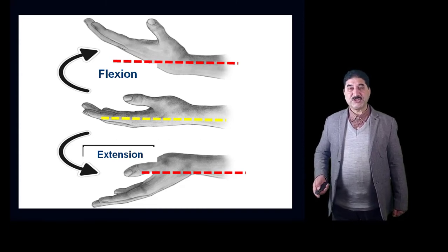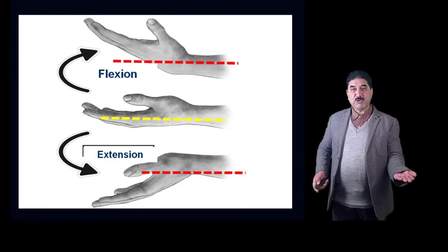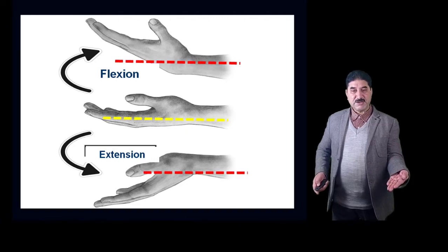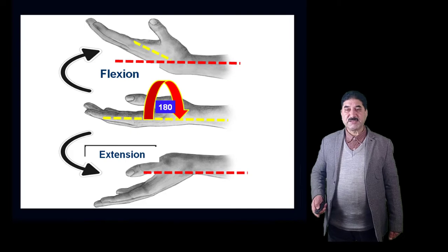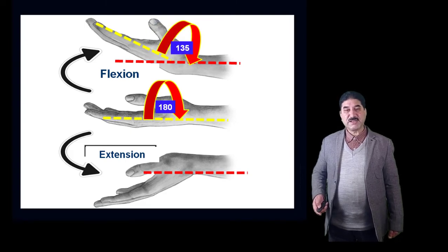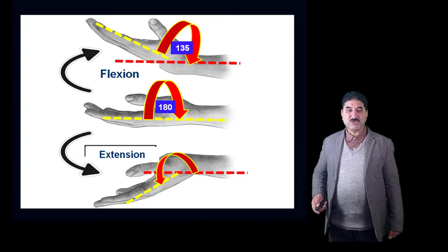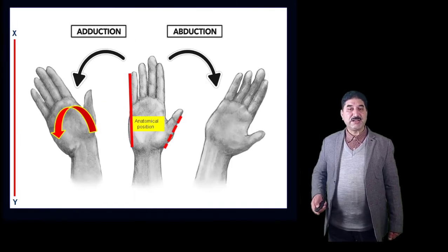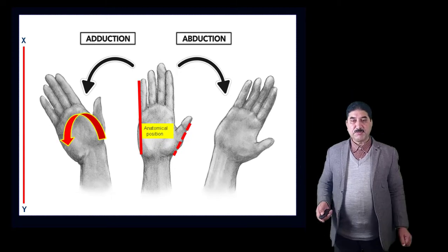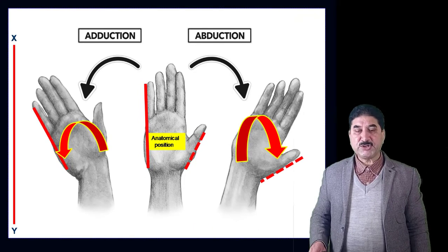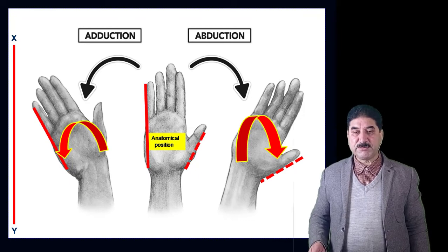Now let us discuss the wrist joint, also called the radiocarpal joint. The various possible movements at the wrist joint are flexion, extension, adduction, and abduction, and the combination of all these movements is called circumduction. During flexion, the flexor surfaces approach each other and the angle of the joint decreases from approximately 180 degrees to 135 degrees. In extension, the angle increases to around 220 degrees. Abduction is movement of the hand away from the median plane, and adduction is movement of the hand towards the median plane.